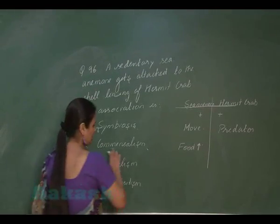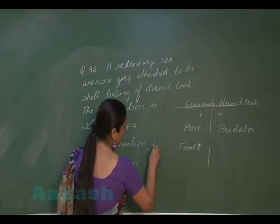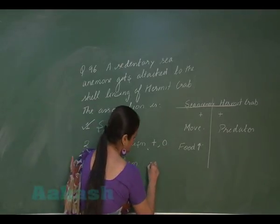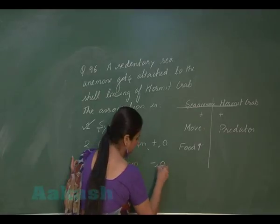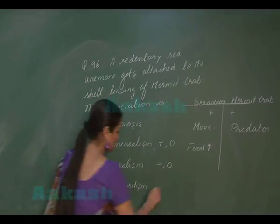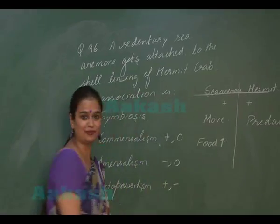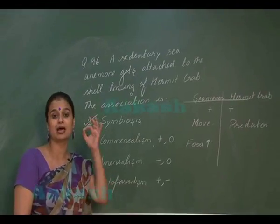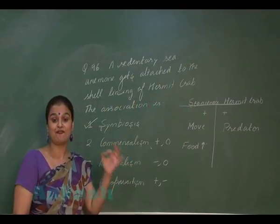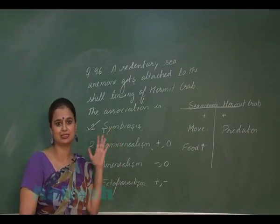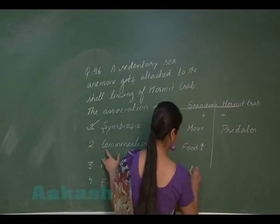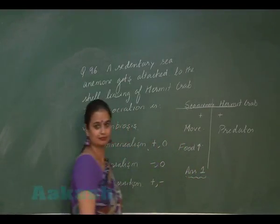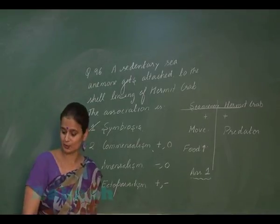Commensalism is a positive-zero interaction, amensalism is a negative-zero type of interaction, and parasitism is a positive-negative type of interaction. All three are not applicable here because it is a positive-positive facultative symbiotic relationship. Therefore, for question 96, the right option is answer number one.